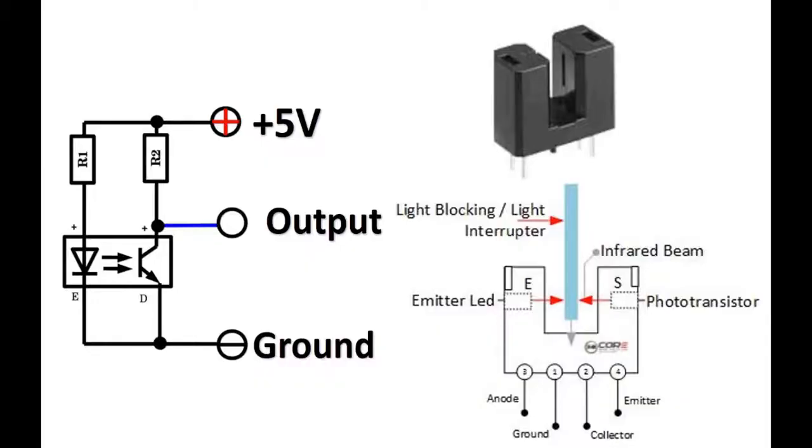To measure motor speed, first we need to find a technique to convert motor rotation into pulses. To convert motor rotations into pulses, we use an infrared optical sensor as shown in this figure. This optical sensor consists of an IR transmitter LED and an IR receiver transistor.